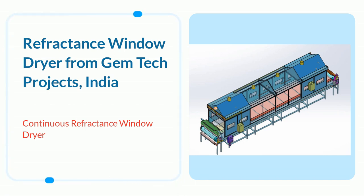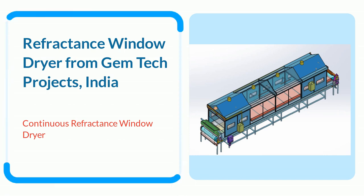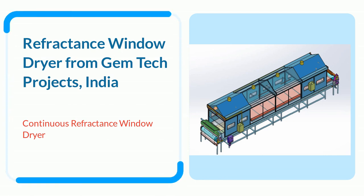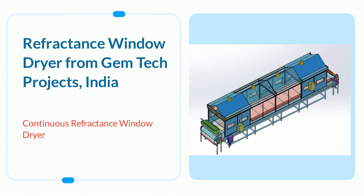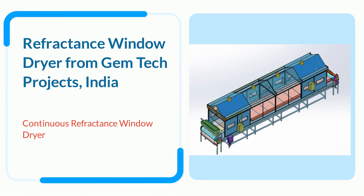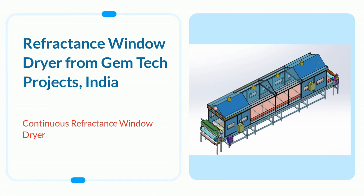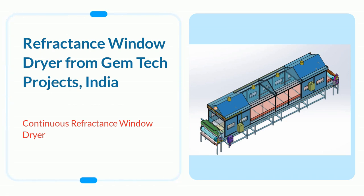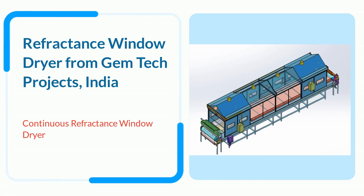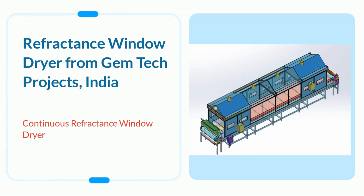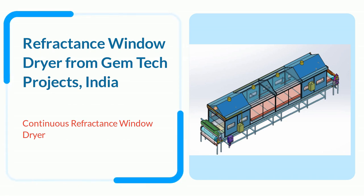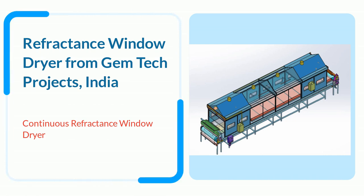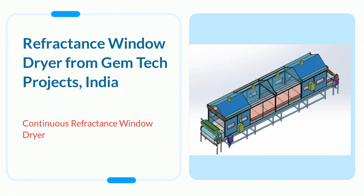Refractance Window Dryer is used for the following applications: Fruits and Vegetables Purees, Single Strength Purees, Concentrated Purees, Chunky Purees, Juices, Seed Pulp, and Sliced Fruits and Vegetables.